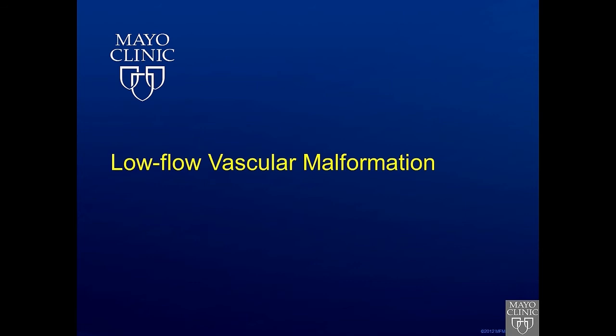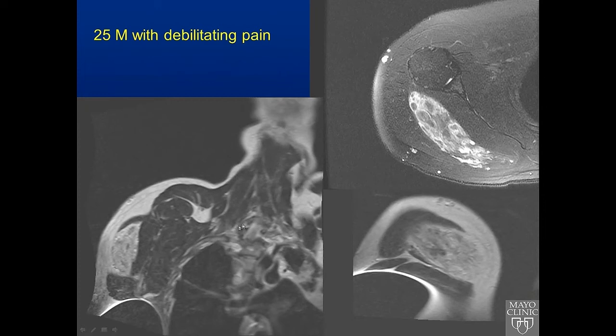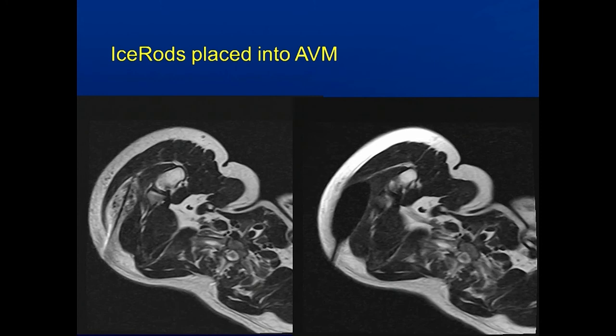Finally, vascular malformations are another targeted area that lend themselves to being treated with MR-guided procedures. Many of these vascular malformations had failed standard treatments and are looking for potential solutions, as they many times cause extreme pain. One way we can treat them is by freezing with cryoablation. Here we have a fairly extensive vascular malformation in the right shoulder. We can target this area with MRI, place the needles in, and then you can see the ice form within the tissue, freezing that vascular malformation.